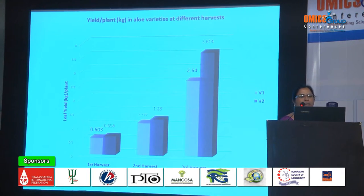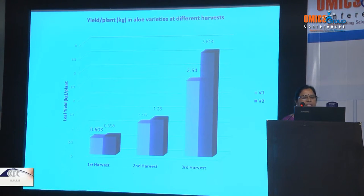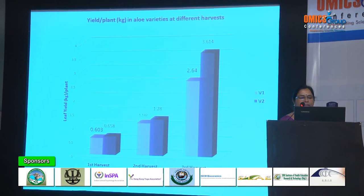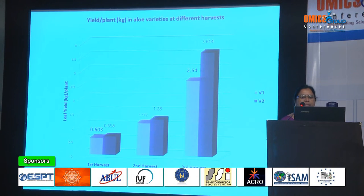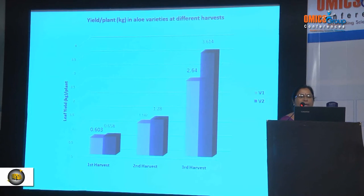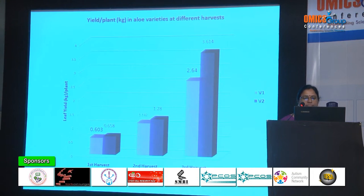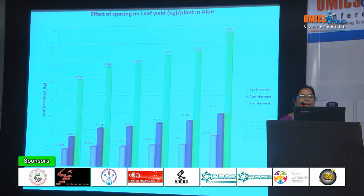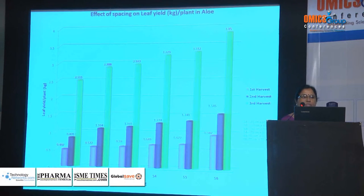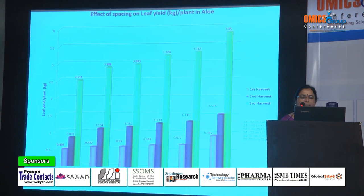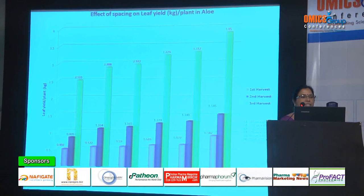This slide shows yield per plant at different harvests. During the first harvest, average yield per plant is higher in yellow flowering type at 658 grams per plant. In the second harvest, yellow flowering type produced 1.28 kg per plant. In the third harvest, the trend continued with yield per plant of 3.6 kg in yellow flowering type. The maximum yield per plant was recorded in S6 due to more leaf weight. The same trend continued in second and third harvests, with average yield per plant highest in S6.